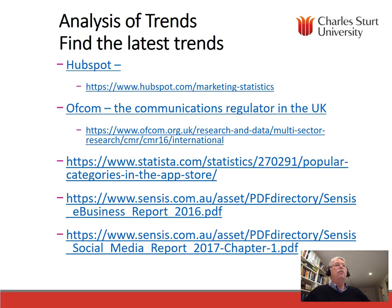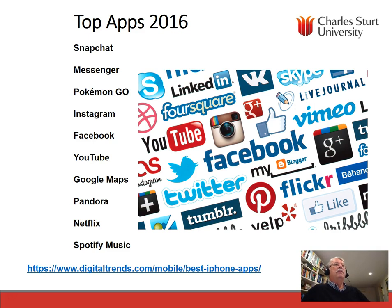I've identified a few websites which I think you'll find useful, containing relatively up-to-date details, including HubSpot, Ofcom (the communications regulator in the UK), Statistica, and census.com.au in Australia, which has also produced an e-business report in 2016 and the latest social media report for 2017. Some of the top apps in 2016 worldwide were Snapchat, Messenger, Pokemon, Instagram, Facebook, YouTube, Google Maps, Pandora, Netflix, and Spotify — you can find these details on digitaltrends.com. In terms of Google Play Store, it's grown from almost nothing in December 2009 up to nearly 2.8 million apps as of March 2017, a tremendous growth increasing every year since 2009.